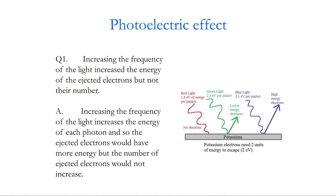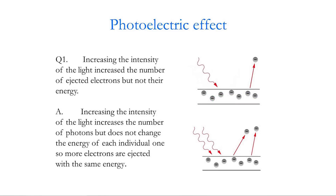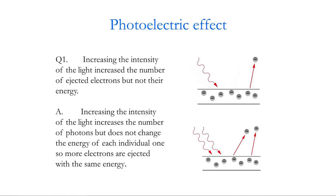Here we have a material which ejects electrons if light of a certain frequency falls upon it. With potassium, the electrons need two units of energy to escape. The photons of red light don't have enough energy, so no electrons are released. With green light, electrons are released with a certain amount of energy. With blue light, the same number of electrons are released but with a higher energy. Increasing the intensity of the light — that's increasing the number of photons — increases the number of electrons but not their energy. If one photon ejects one electron, two photons eject two electrons, but those electrons have the same energy.